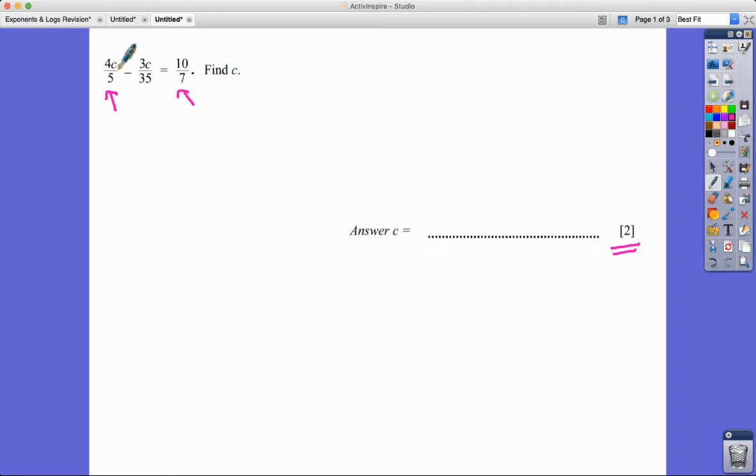So we'd have to multiply this fraction here by, I hope you agree, 7, and this one here by 5. And if we do that, remember we times the top and the bottom, the numerator and the denominator. 4C multiplied by 7 is 28C, and on the bottom, 7 times by 5 is 35.